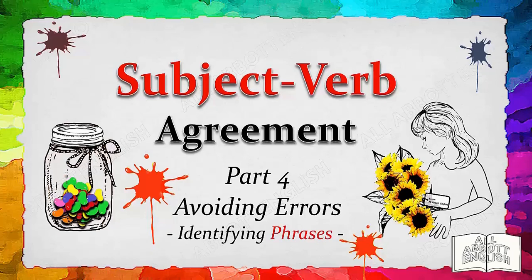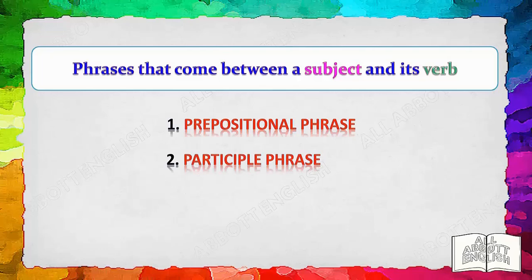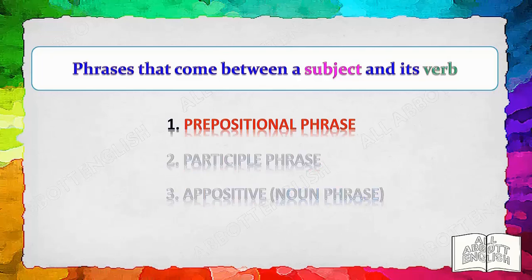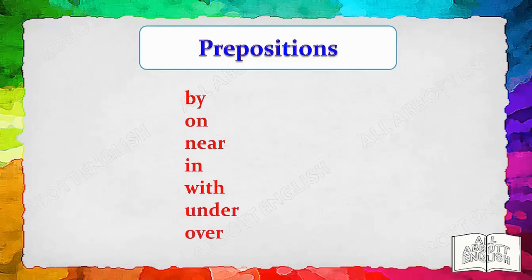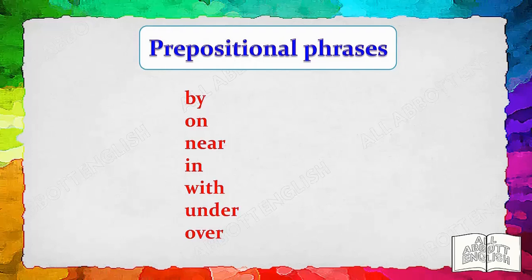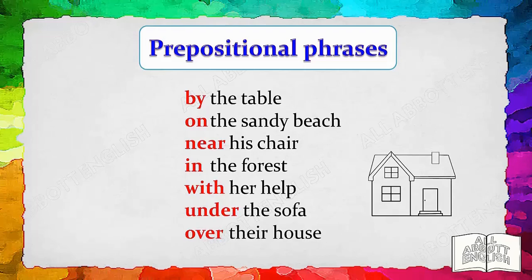The specific phrases that come between a subject and its verb include: prepositional phrase, participle phrase, and appositive — which is a noun phrase. A prepositional phrase is a group of words that begins with a preposition and ends with a noun or pronoun. Examples of prepositions include: by, on, near, in, with, under, over. Examples of prepositional phrases: one of the shirts, on the table, near the sandy beach, in the forest, with their help, under the sofa, over their house.